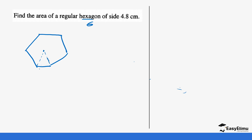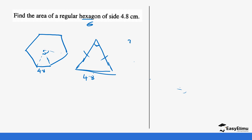The side we have been given is 4.8 cm. Drawing one of those triangles, both equal sides are 4.8. To find the angle at the center, all six central angles total 360°, so we divide: 360° ÷ 6 = 60°. The central angle of each triangle is 60°.